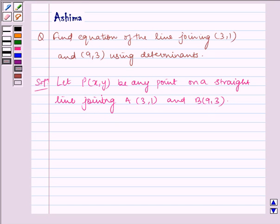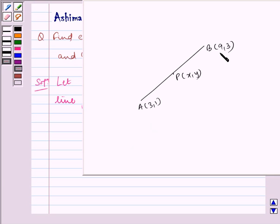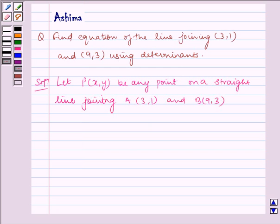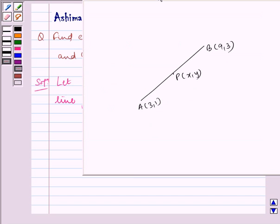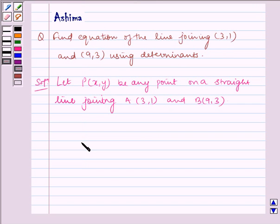Now let us see the figure. This is the line AB, A with vertices (3,1), B with (9,3), and we have assumed a point with vertices (x,y). Now it is clear from the figure that A, P, B are collinear.